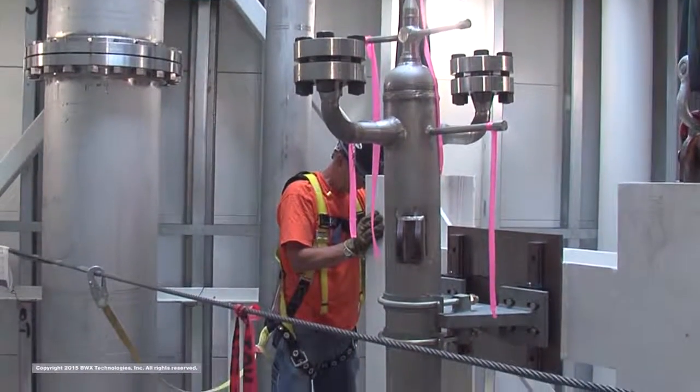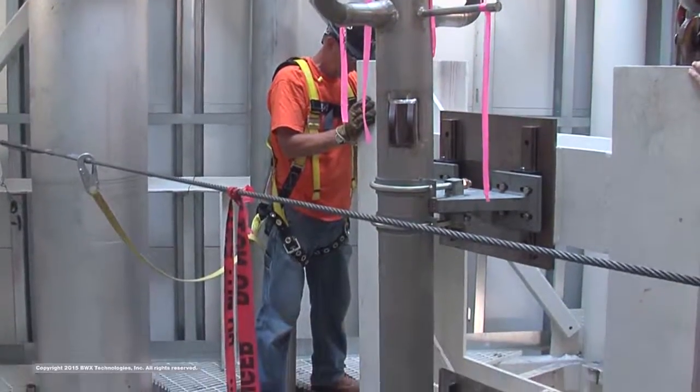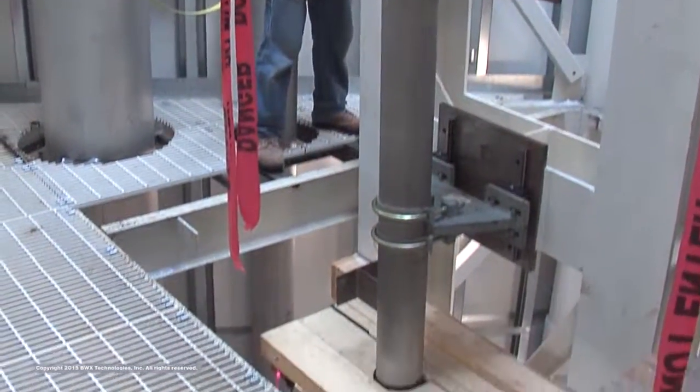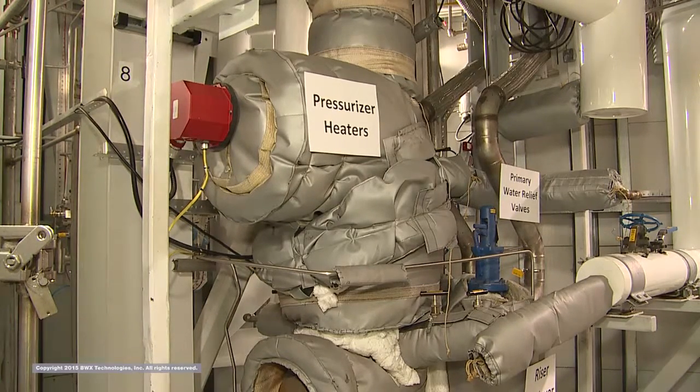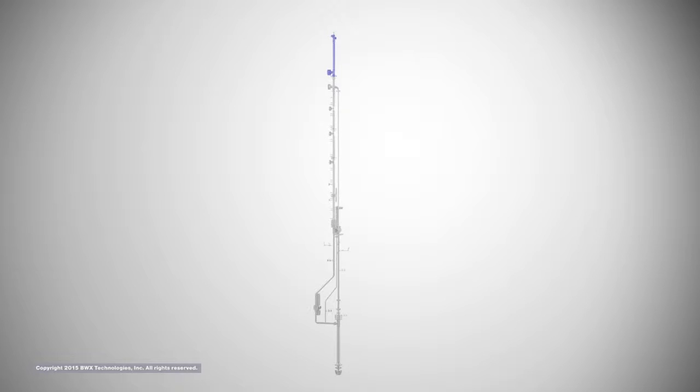The pressurizer measures 9 feet 5 inches in height and communicates with the primary loop. It includes a 6-kilowatt heater and spray nozzle to maintain pressure in the loop. The top of the pressurizer has connections for depressurization simulating passive emergency core cooling and a connection for simulating a spectrum of loss of coolant accident brake sizes.